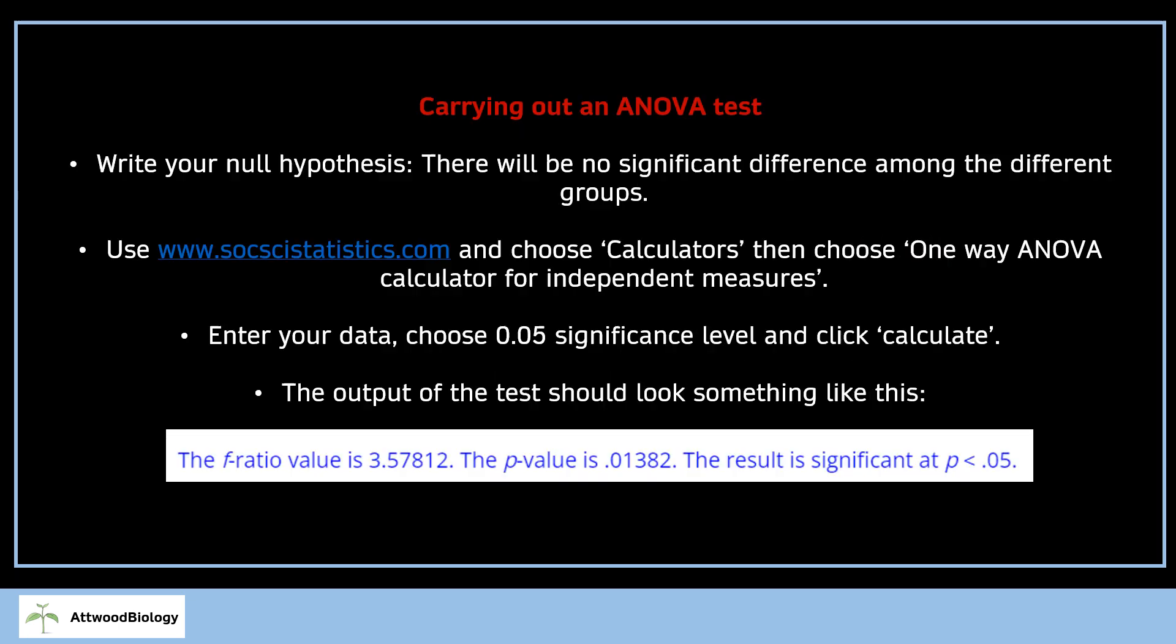This is why we use it. We've just gone through that. To carry out the ANOVA test, first write your null hypothesis in your IA. The null hypothesis will state that there will be no significant difference among the different groups. You can change that and insert your independent variable rather than just saying generic different groups.